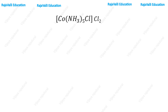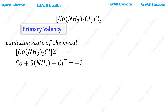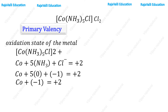Next we find out the primary and secondary valences of the given complex. Primary valency is the oxidation state of the metal, so first we consider the cationic complex. By putting the oxidation state of ammonia and chlorine, simplifying these values, we get the oxidation state of cobalt as plus three.